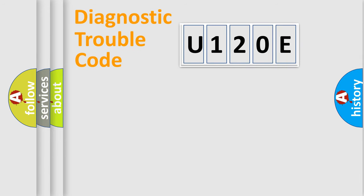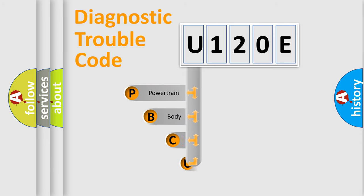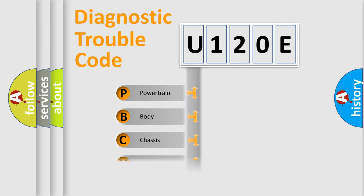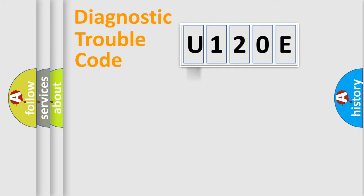Let's do this. First, let's look at the history of diagnostic fault code composition according to the OBD2 protocol, which is unified for all automakers since 2000. We divide the electric system of automobile into four basic units: Powertrain, Body, Chassis, and Network.